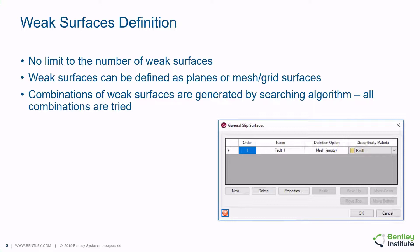A few things about weak surface definitions: there is no limit to the number of weak surfaces the user can input. It should also be noted that weak surfaces can be defined as planes in 3D or they can be uneven surfaces defined by a mesh or rectangular grid. Combinations of intersections of weak surfaces can be considered to form a critical slip surface. This work is done by the searching algorithm and the user can specify the combinations that are explored; by default, all combinations are explored.